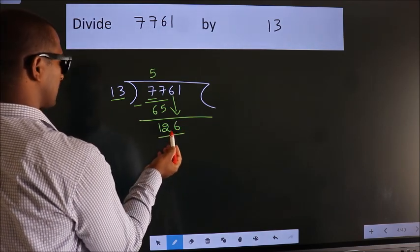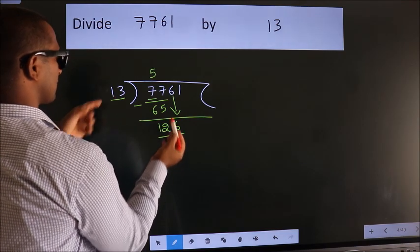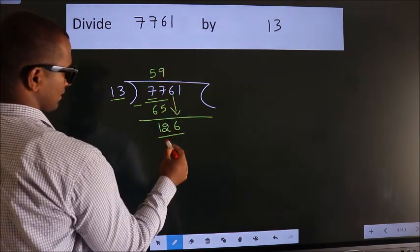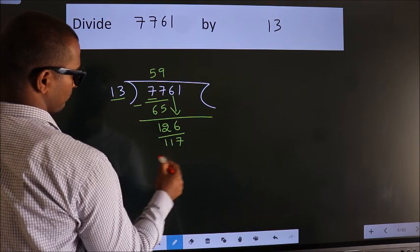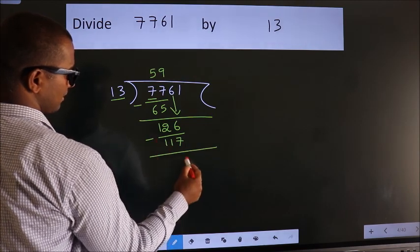A number close to 126 in 13 table is 13 nines, 117. Now we subtract. We get 9.